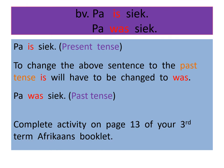Let us begin by looking at the example in the purple block. 'Pa is sick' means 'father is sick.' This sentence is in the present tense, which means that it is happening right at this moment. To change this sentence into the past tense, a very simple change needs to take place — you need to change 'is' to 'was.'